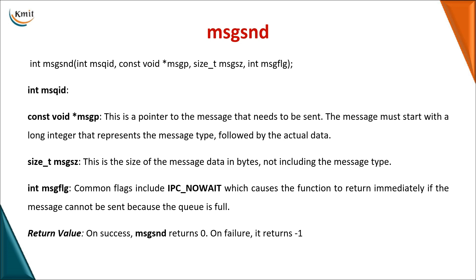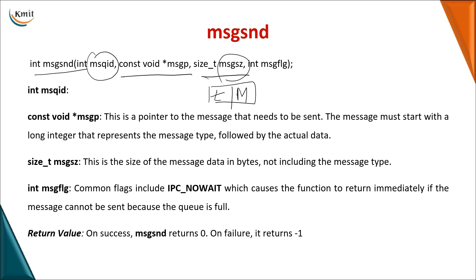The msgsnd function is used at the sender side to place a message onto the queue. Its parameters are: the queue ID, a pointer to the actual message, the size of the message (excluding the type field — only the actual message text is counted), and a flag. A common flag is IPC_NOWAIT, which causes the function to return immediately to the caller if the queue is full. On success it returns 0; on failure it returns -1.